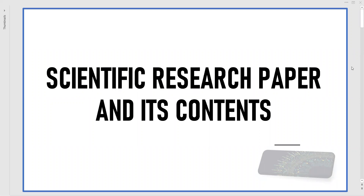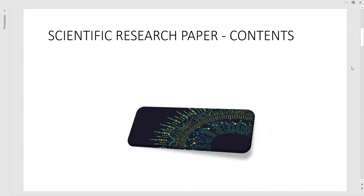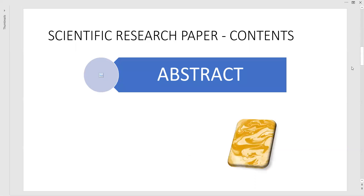Welcome. We are discussing the scientific research paper and its contents. A scientific research paper is an experimental investigation report which contains everything starting from the background to the methodologies, to the investigation and analysis, to the summary and conclusion. Now coming to the contents of the scientific research paper.